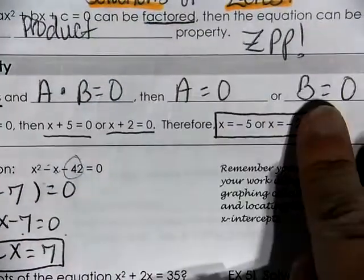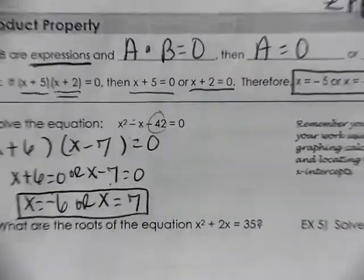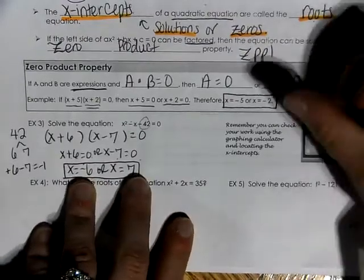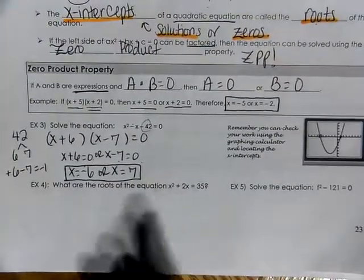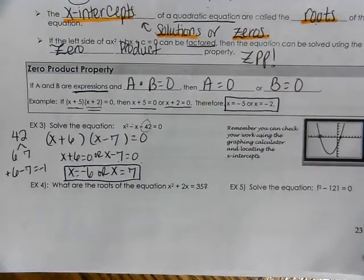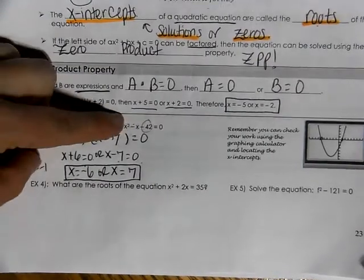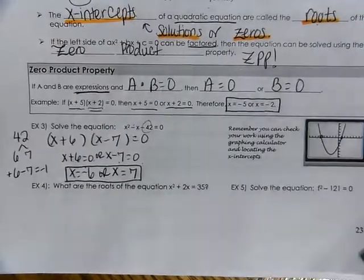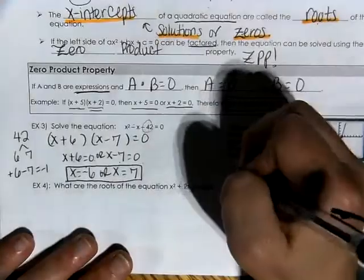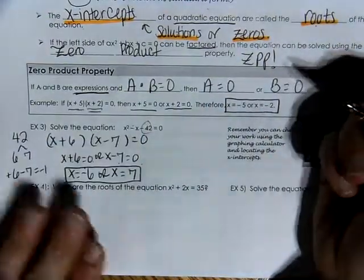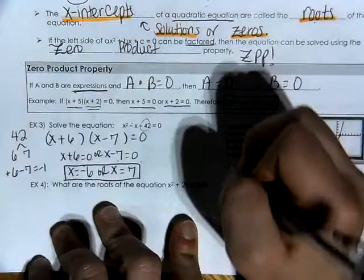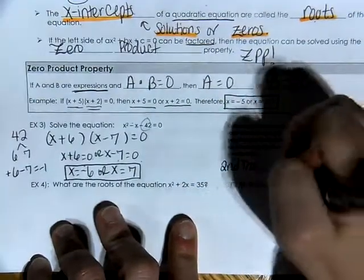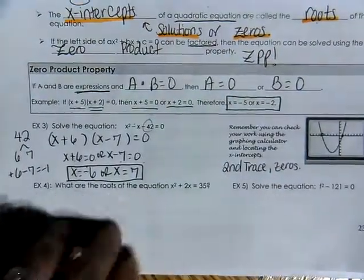I put an 'or' right here because it's either one or the other — that's what we had: A equals 0 or B equals 0. You can always check with your graphing calculator, because these solutions are your x-intercepts. Put the equation into y equals, then press second trace, go to zeros, and identify your zeros.